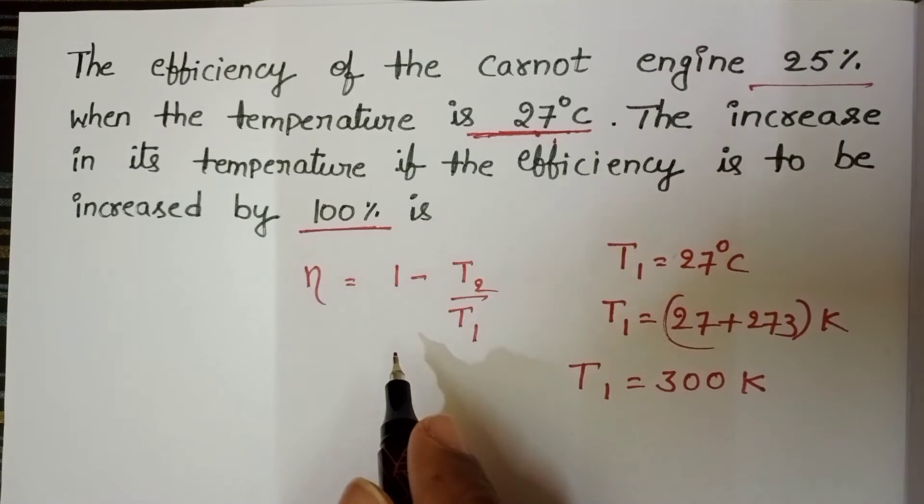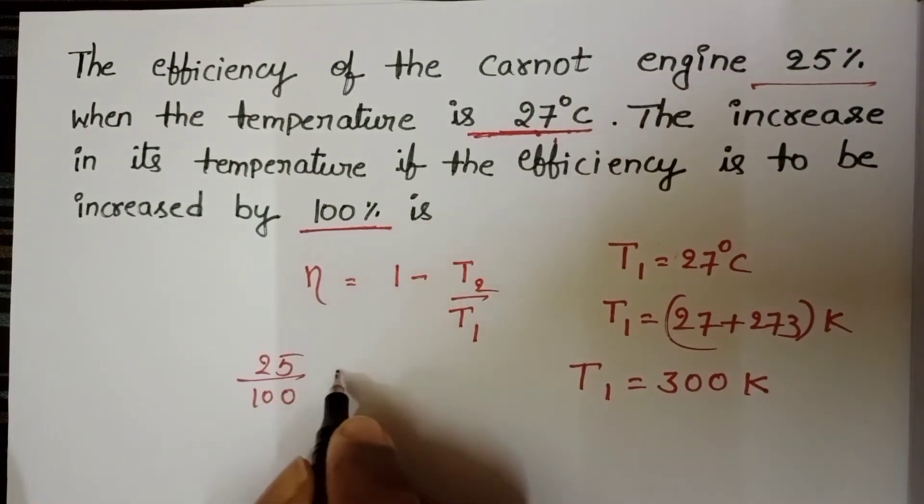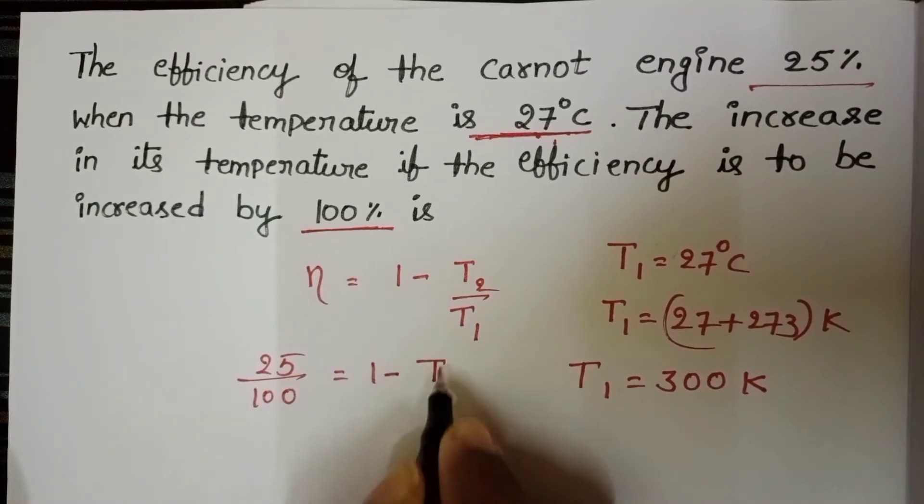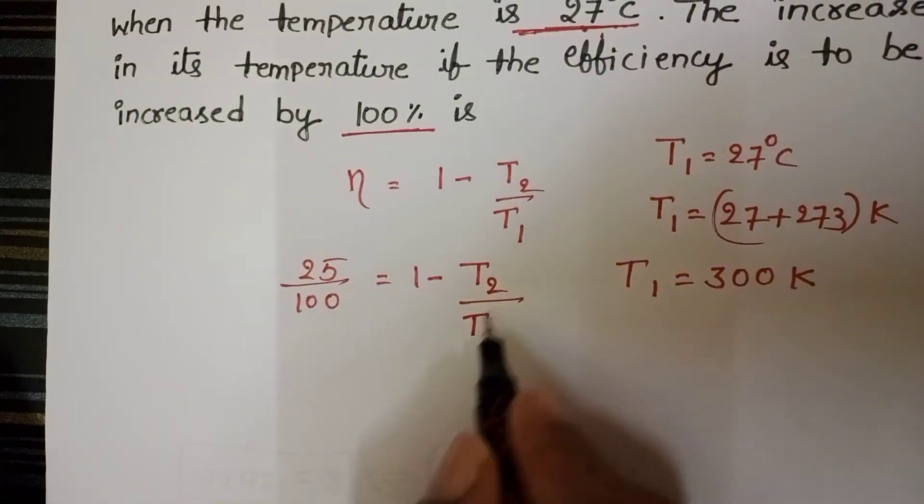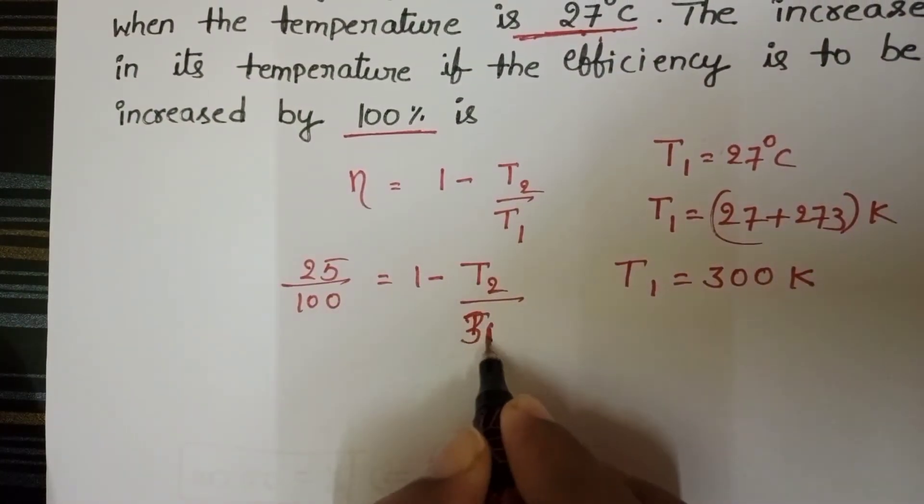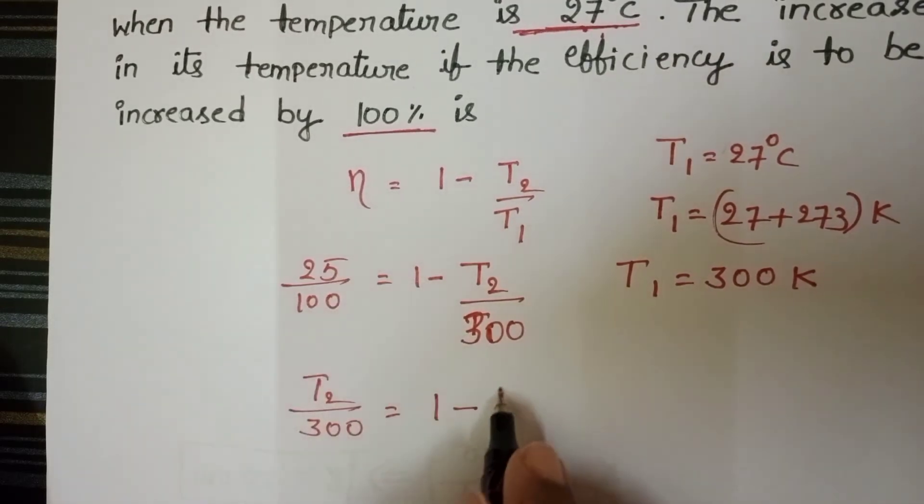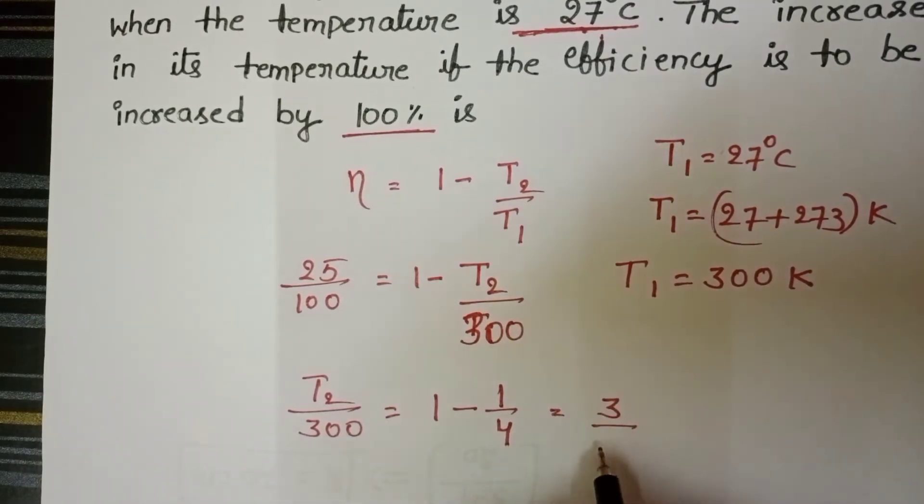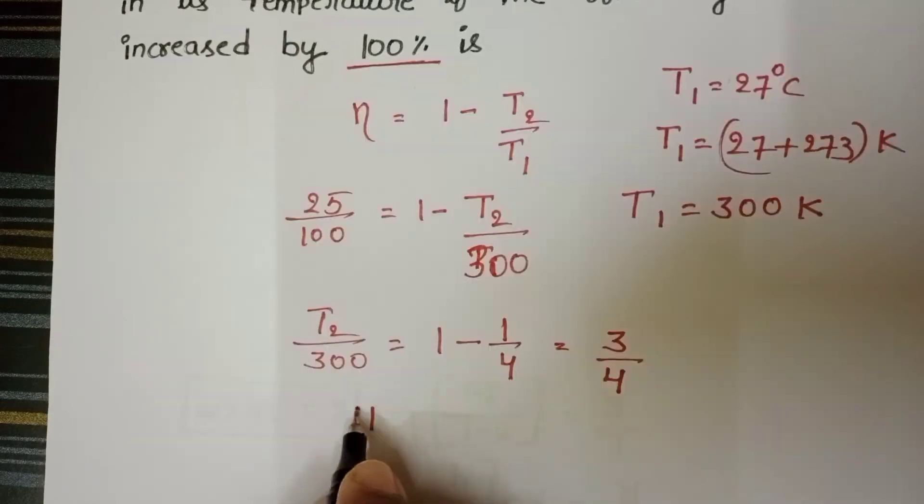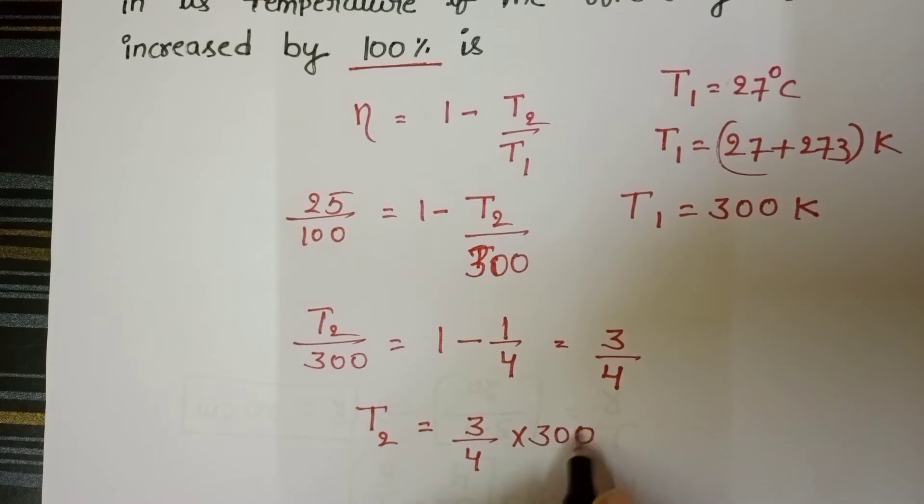When temperature of the source is at 300 Kelvin, then efficiency is 25%. So 25 by 100 equals 1 minus T2 by T1. We need to find the temperature of the sink. T2 by 300 equals 1 minus 1 by 4, equals 3 by 4.